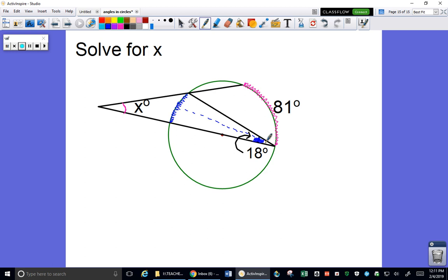For this problem, 18 is an inscribed angle, which means that this arc is 2 times the inscribed angle. So this arc is 36 degrees, because that's 2 times 18.